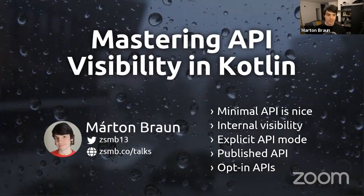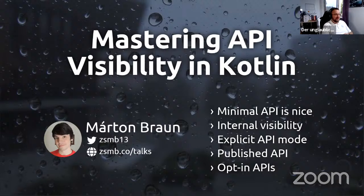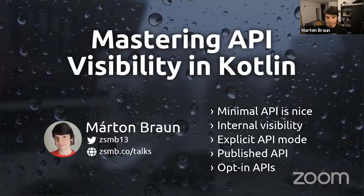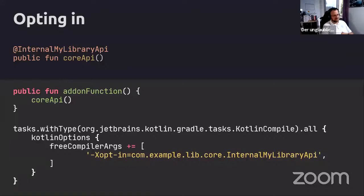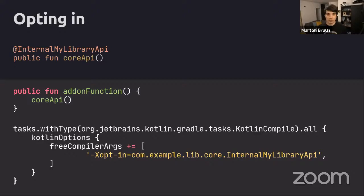Question from Yogov: can you make a whole module opt-in? Yes - going back to that slide, if you want to opt in for the entire module you add this Gradle configuration in that module, which tells the compiler that within this module it's fine to use anything annotated with @InternalMyLibraryApi that would otherwise produce warnings or errors.